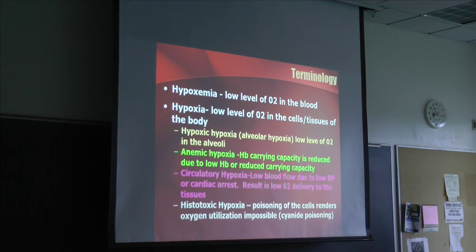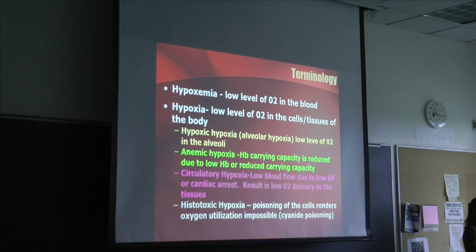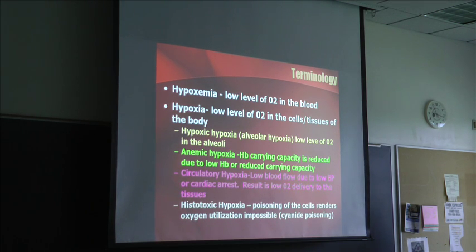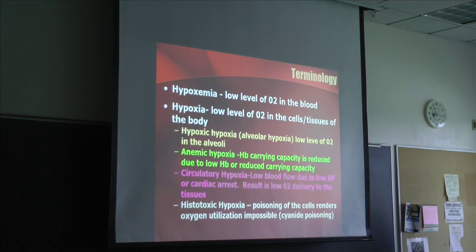The next question: heart failure. Heart failure causes low amounts of oxygen in the tissues. Is it hypoxic, anemic, circulatory, or histotoxic hypoxia? Circulatory. Oxygen isn't being delivered to the tissues because of poor cardiac output. And what if you're standing on Everest and your oxygen level is low? Hypoxic hypoxia.